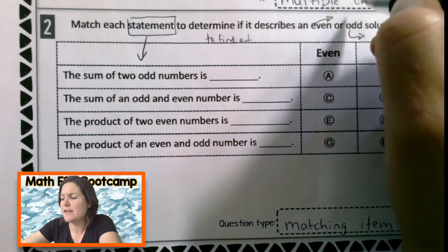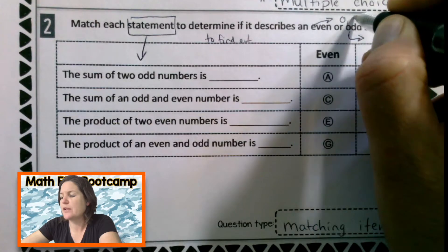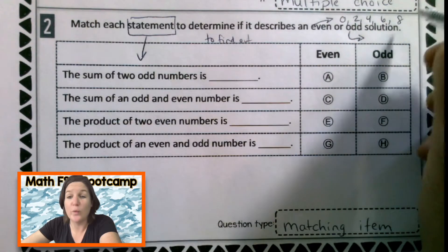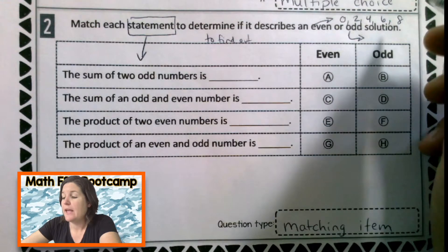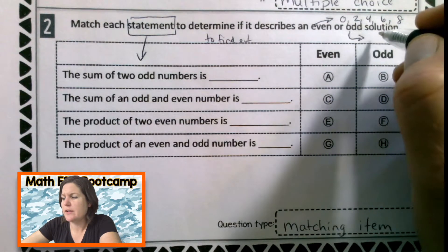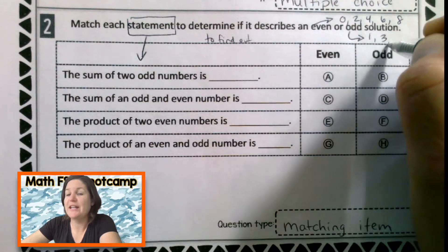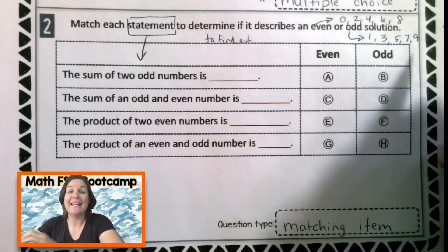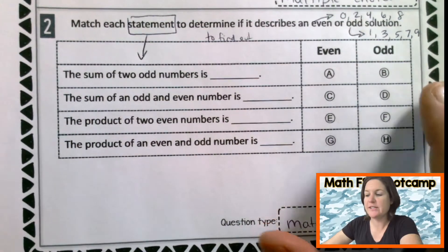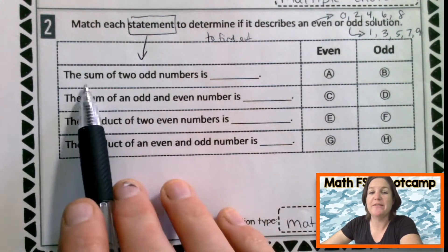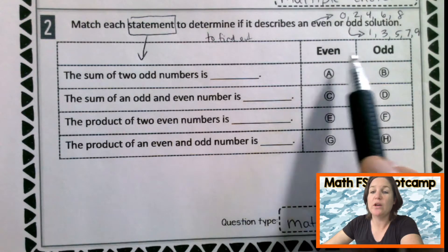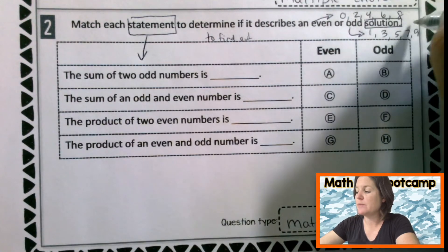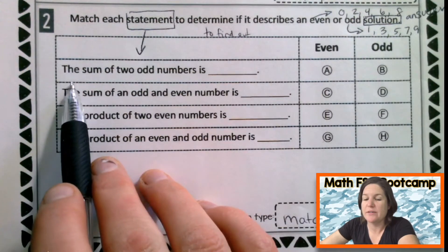Okay. What do I know about even? Even numbers end in 0, 2, 4, 6, or 8 in the ones place. Right? And what are some odd numbers? 1, 3, 5, 7, and 9 in the ones place. So let's take a look at this row and determine if this statement would give us an even or odd solution. Solution. Oh, let's talk about solution. Solution just means answer.